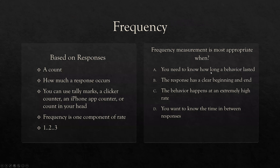Let's start with frequency. Frequency is the simplest and easiest to understand. It's based on the number of responses because you're simply counting how many times something occurs. If I touch my nose five times, the frequency is five. If there are three tantrums during your session, frequency is three. Very straightforward. You can use tally marks, a clicker counter, an iPhone app counter, or you can count in your head — though I don't recommend it, as it's not as accurate as using an actual tool.